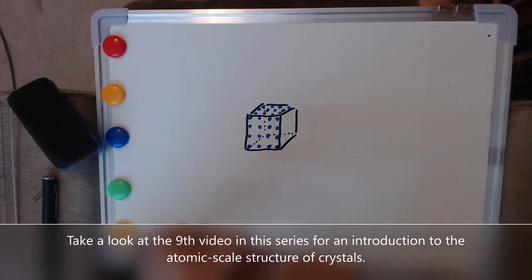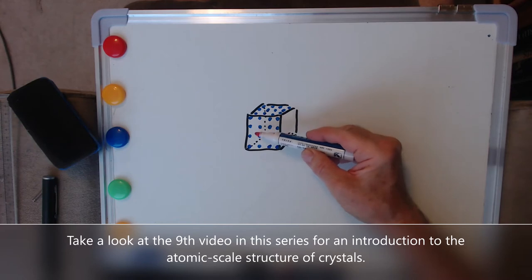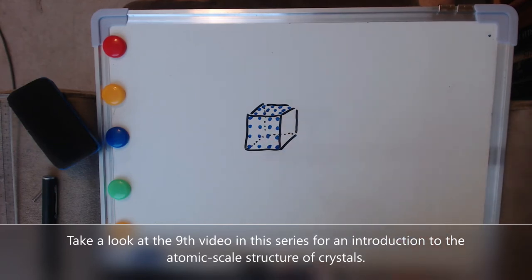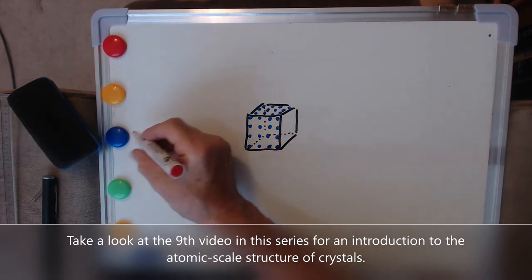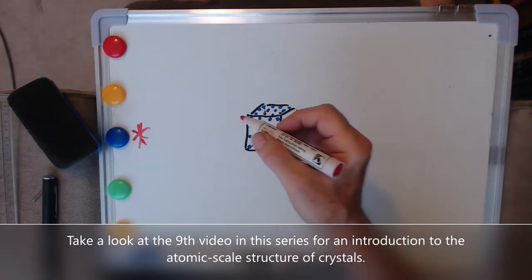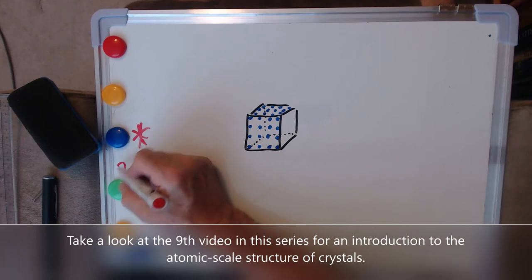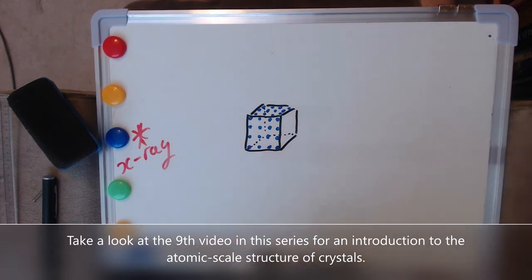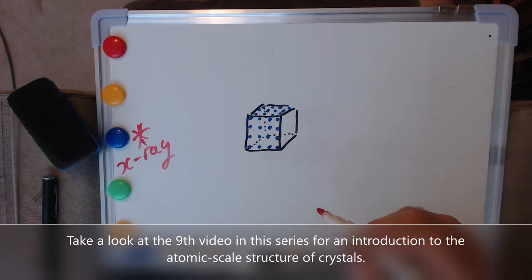So to do a diffraction experiment actually all we need is to be able to shine some light through, radiation through, that has a wavelength that is roughly on the same scale as the spacing between the atoms in our crystal. So a very convenient and much loved source of light of this sort of wavelength is the X-ray. So actually most of what you'll see talked about, I suspect, in terms of diffraction is X-ray diffraction. Although you can actually perform diffraction experiments with all sorts of other probes as well.